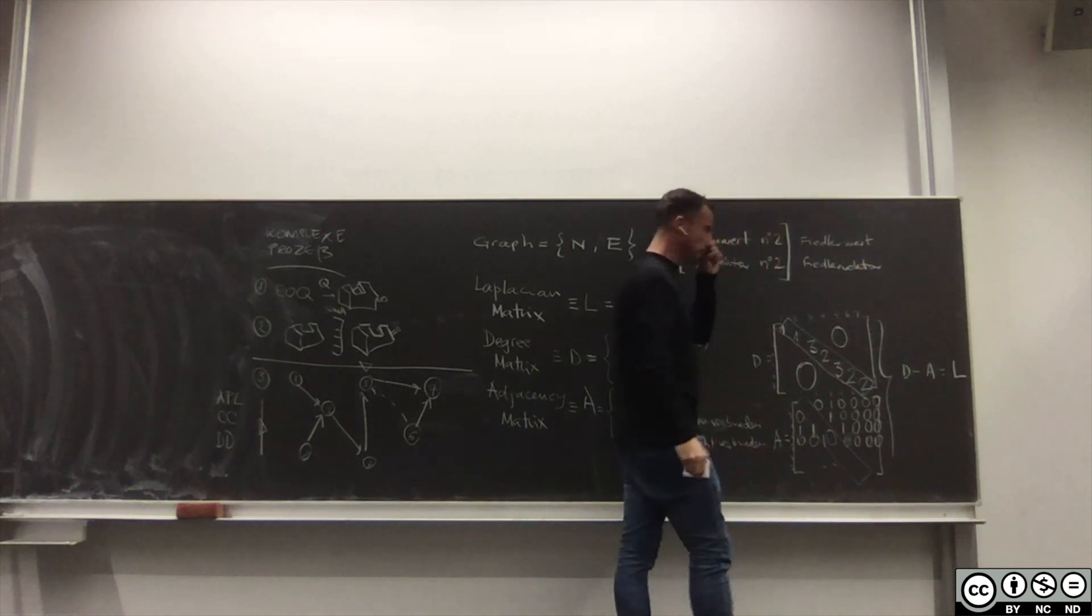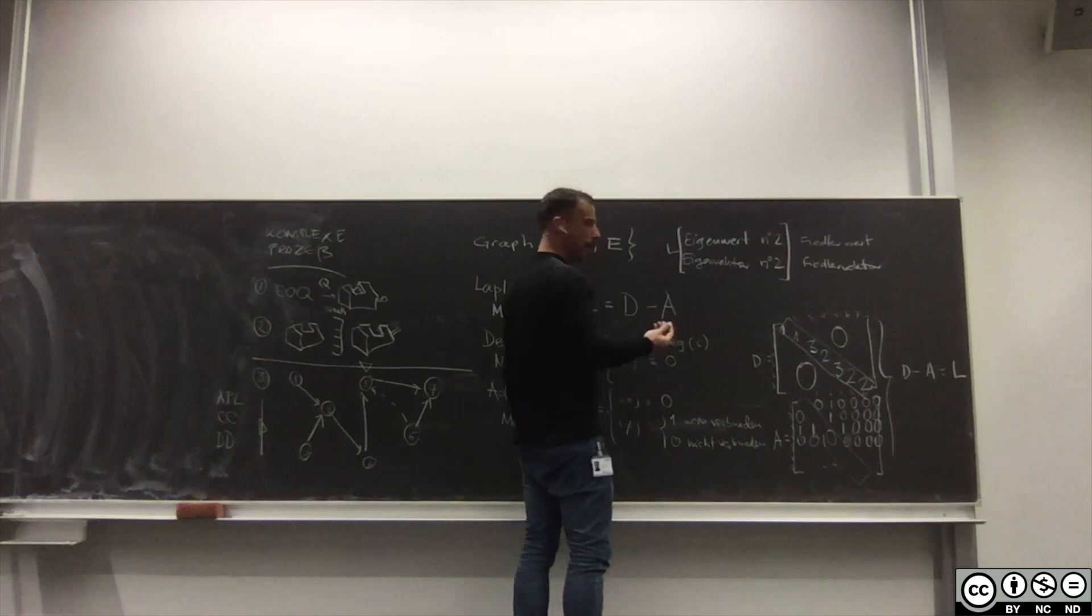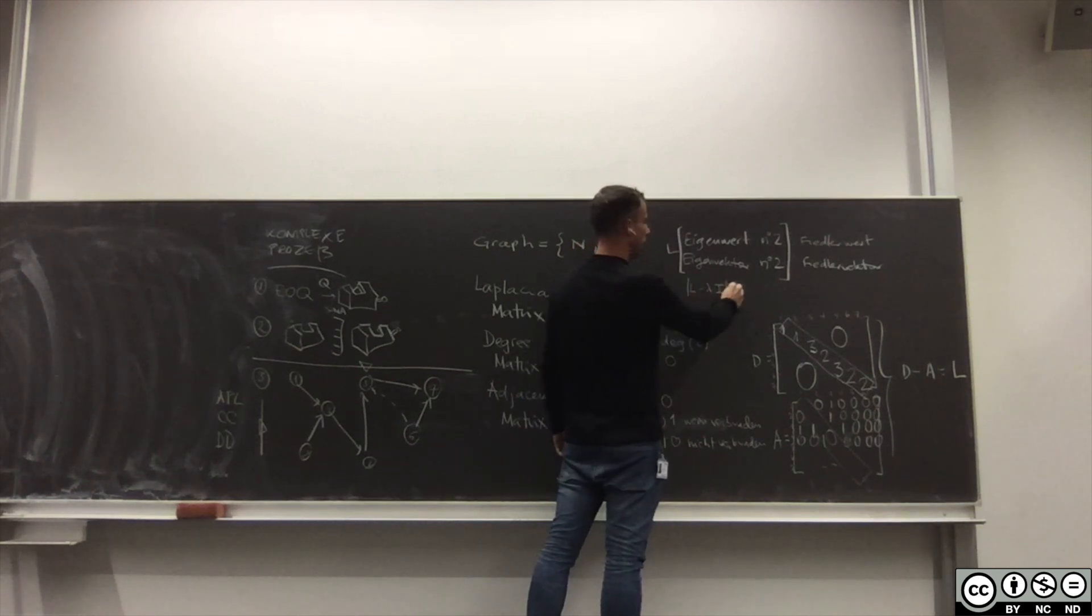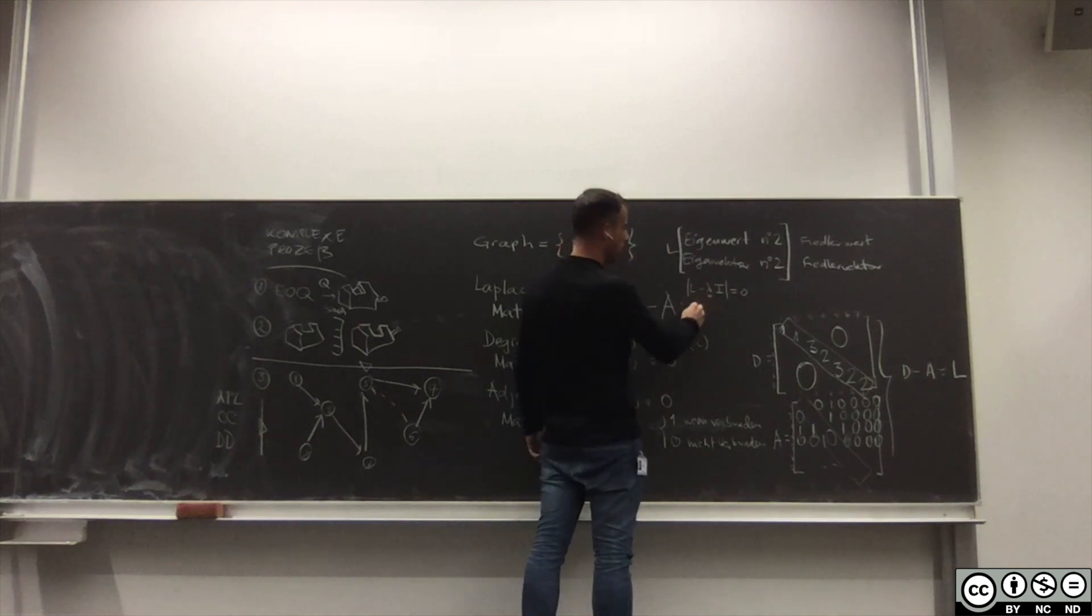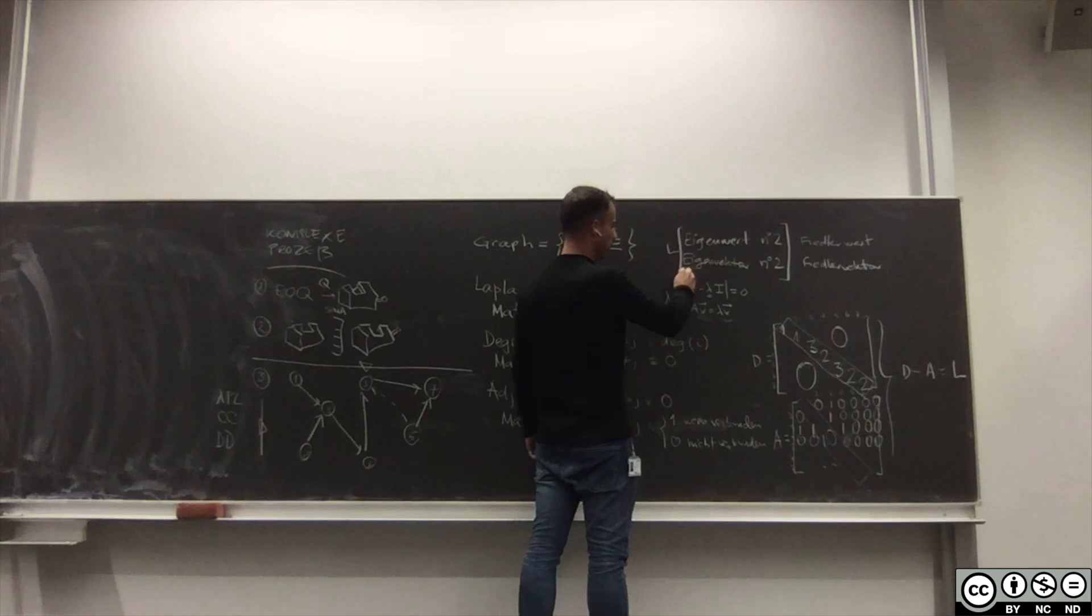Und also wie man einen Eigenvektor berechnet ist einfach L minus Lambda I im Determinant gleich 0, das ergibt die Eigenwerte. Und Av gleich Lambda V, das ergibt die Eigenvektoren. Das nochmal im Klammer.